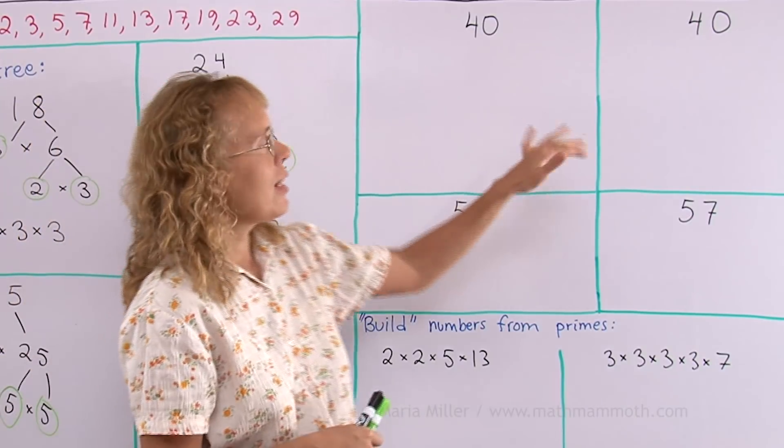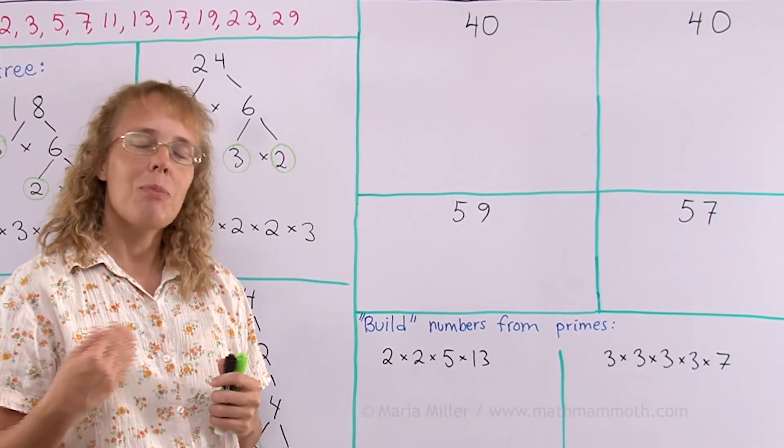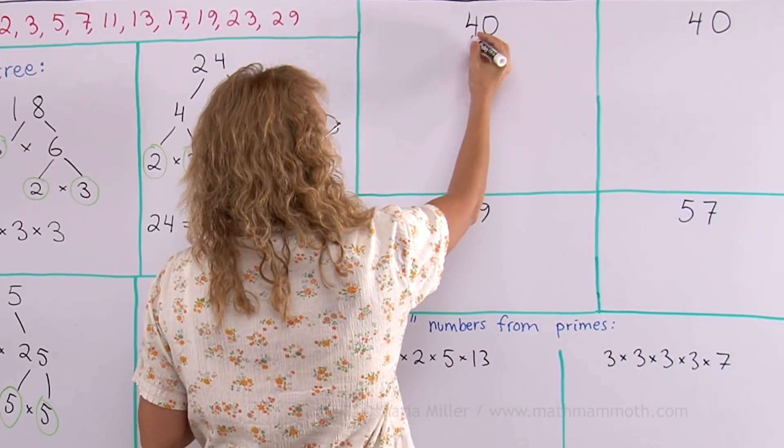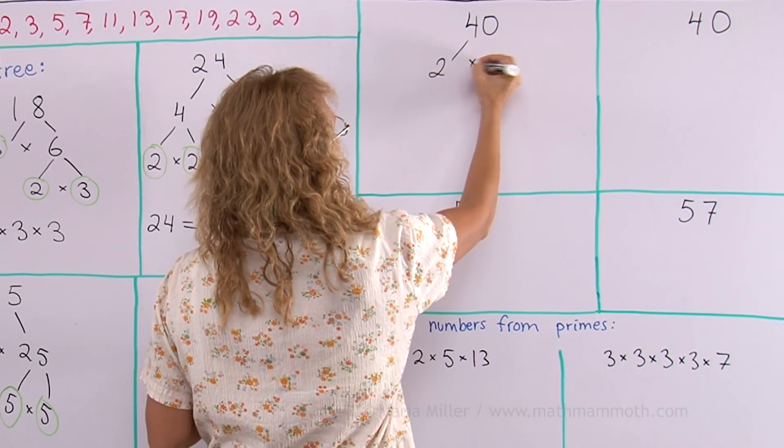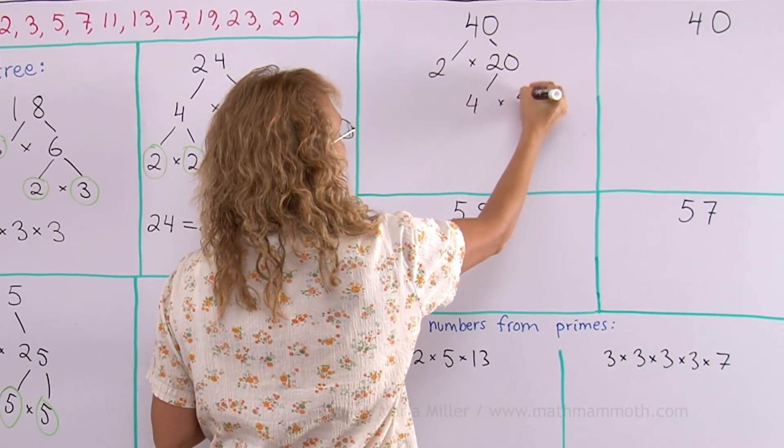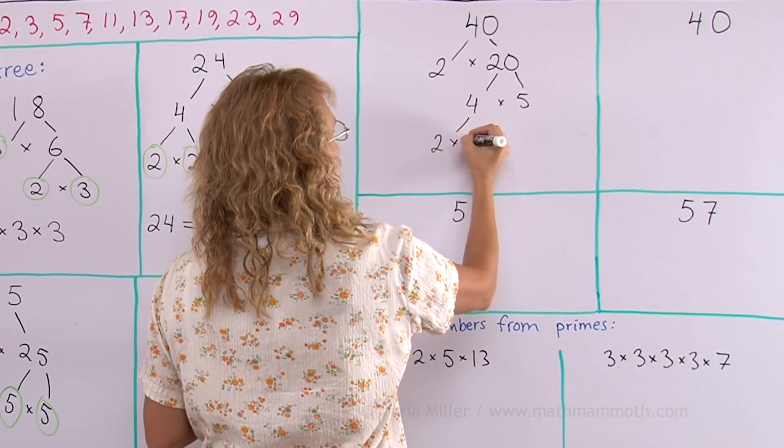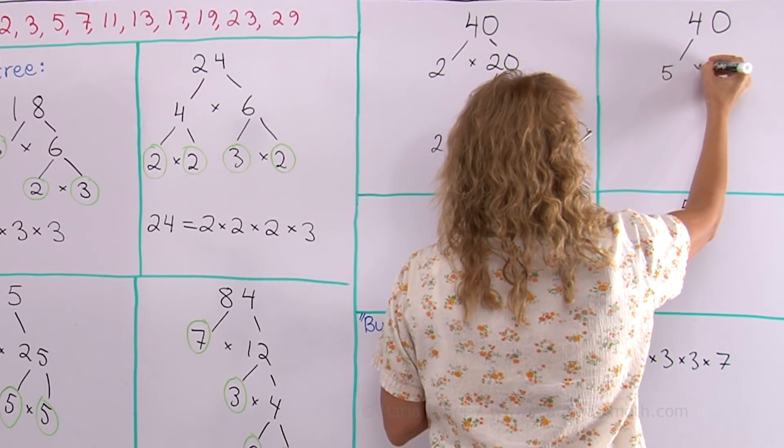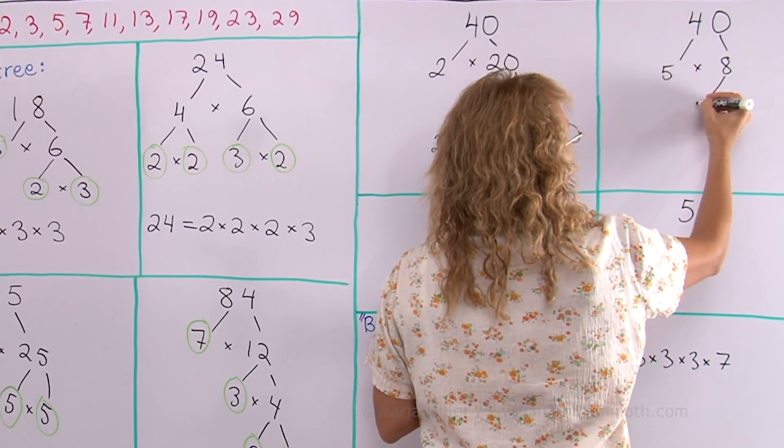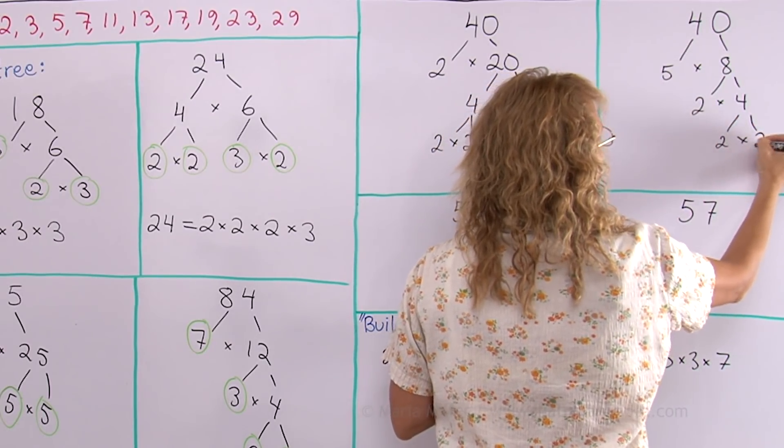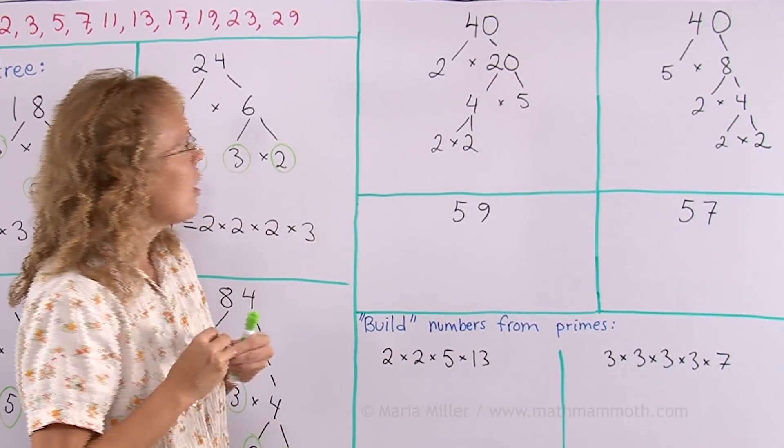Here I want to illustrate that we will get the same result, no matter how you start out with your factoring. 40—I could start it out as 2 times 20, right? 20 is 4 times 5, and then 4 is 2 times 2. Over here, let's say I start out by 5 times 8. Then 8 is 2 times 4, and 4 is 2 times 2.